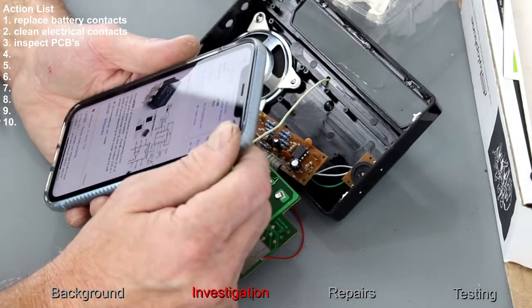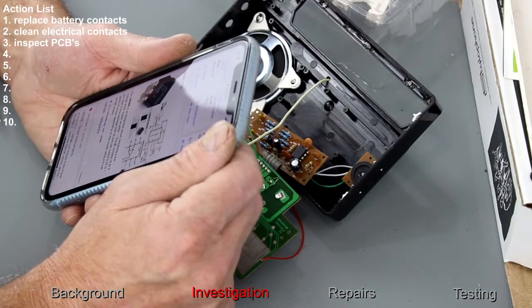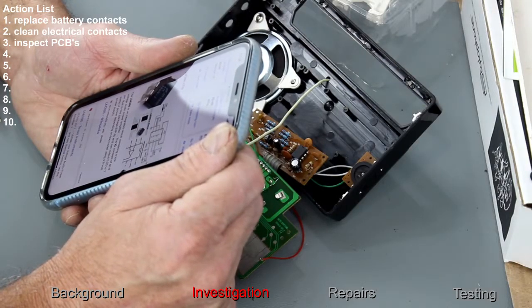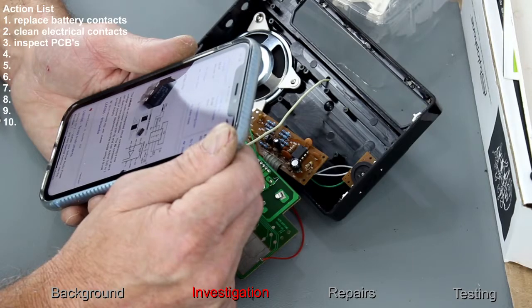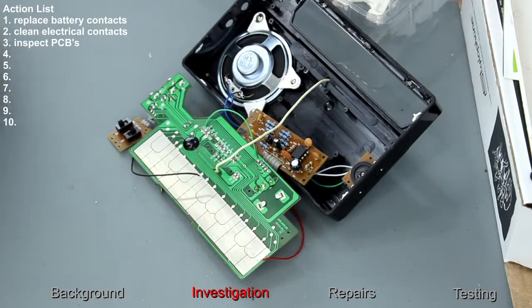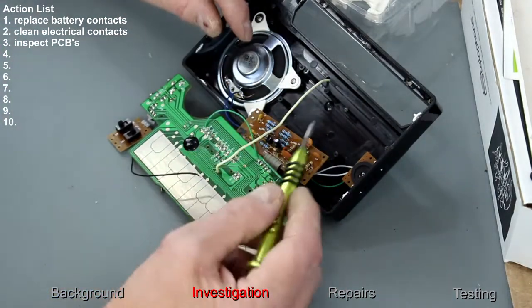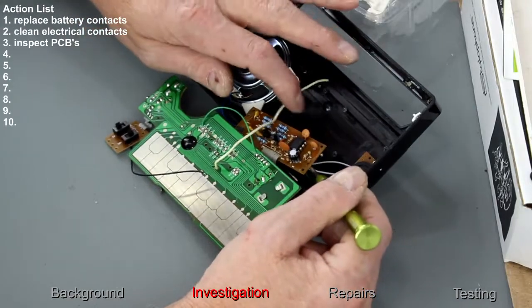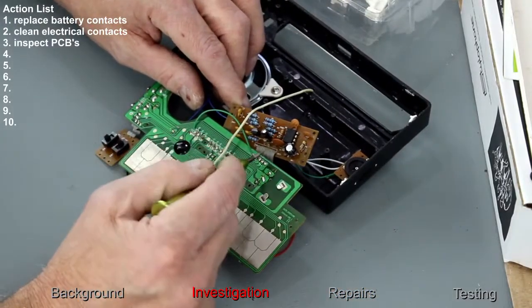LM386 is an integrated circuit containing a low voltage audio power amplifier. The IC consists of an 8-pin dual inline package and can output 0.25 to 1 watt depending on the model. I should be able to work that out really, because it's got a speaker here to drive. Here's your power amplifier stage then.